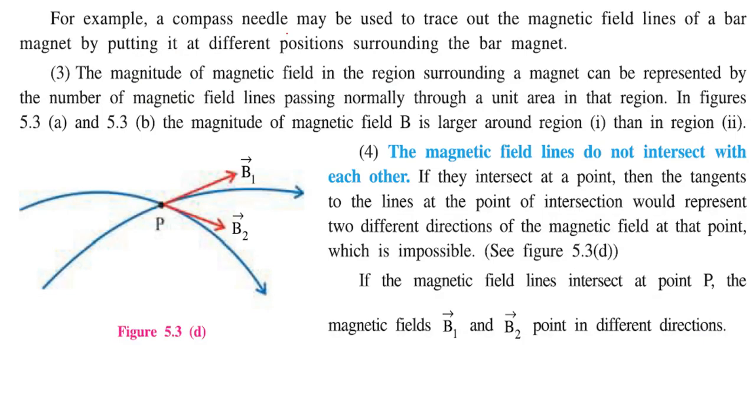For instance, a compass needle may be used to trace out the magnetic field lines of a bar magnet, just by putting it at different positions surrounding the bar magnet.